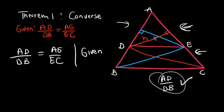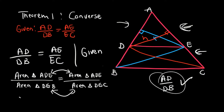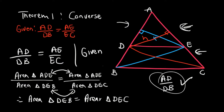From this we can write: area of triangle ADE over area of triangle DEB equals area of triangle ADE over area of triangle DEC. Since the left-hand sides are equal, it follows that area of triangle DEB equals area of triangle DEC.